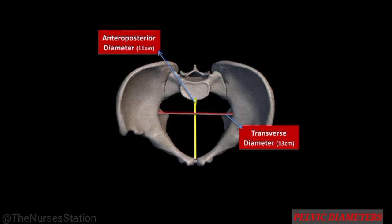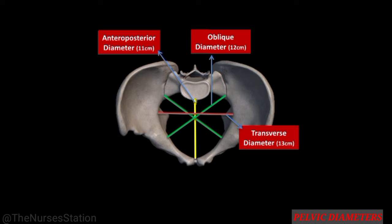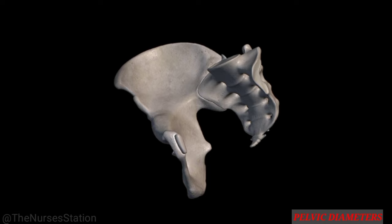The transverse diameter of the inlet is the distance between the two farthest points on the pelvic brim over the iliopectineal lines, measuring about 13 centimeters. There are two oblique diameters of the inlet — right and left — each extending from one sacroiliac joint to the opposite iliopubic eminence, measuring 12 centimeters. The cavity is almost round-shaped.